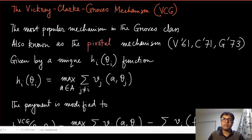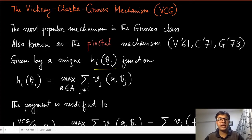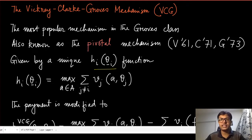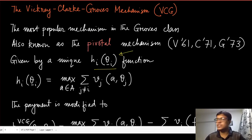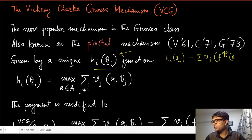How does VCG belong to the Groves class? Looking at the specific h_i(θ_{-i}) function: all mechanisms in the Groves class satisfy the allocative efficiency property — they maximize the sum of valuations of all agents by choosing the allocation. The difference between mechanisms in the Groves class lies in their payments, distinguished by the choice of h_i(θ_{-i}), where the payment is h_i(θ_{-i}) minus the sum of valuations of all agents j ≠ i at the efficient allocation, and this is the payment of agent i.